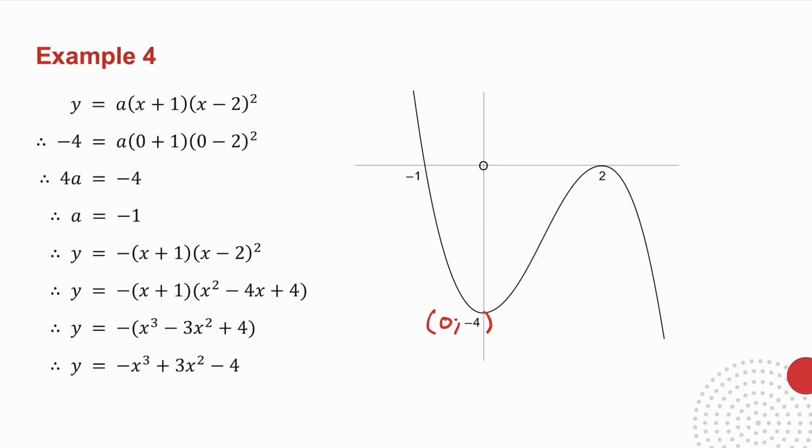I now know that a is minus 1, so all that is left for me to do is to multiply out the brackets and get the equation of the graph.